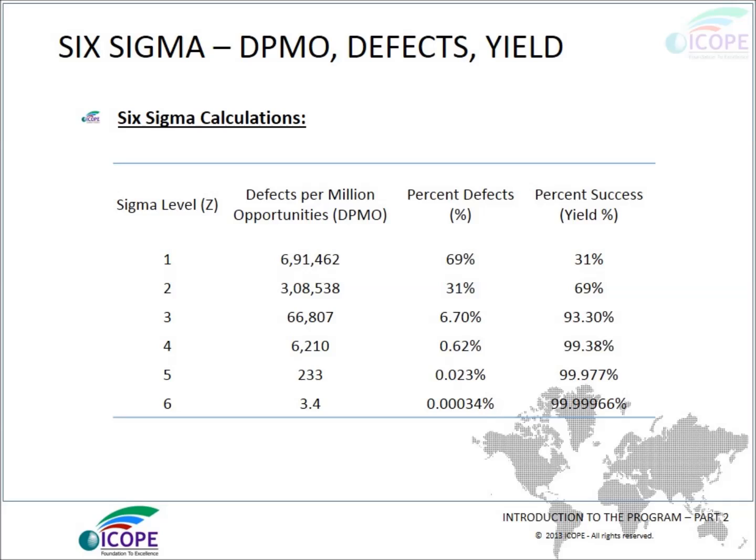For one sigma, there can be as high as 691,462 defects per million opportunities, meaning a defect percentage of 69% and a success rate of only 31%. For six sigma, it can be as low as 3.4 defects per million opportunities, with a defect percentage of 0.00034% and a yield of 99.9966%.